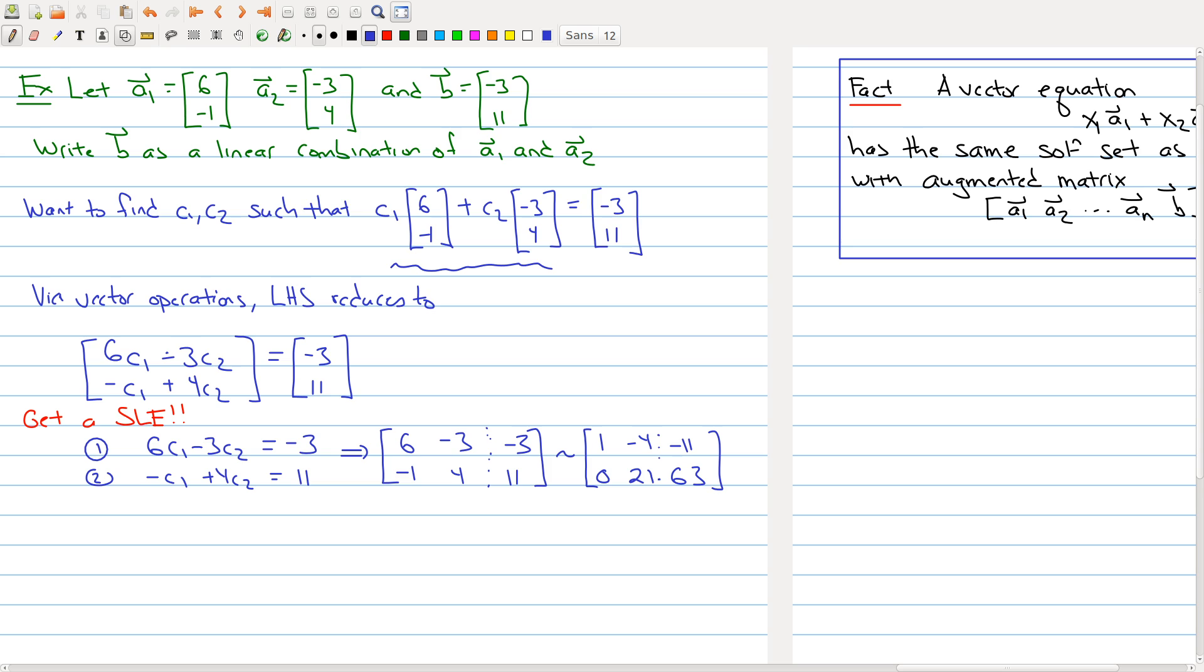And you could do a little bit further, but if you stare at it in this case what we get is that c₂ has to be 3, because 21 times 3 is 63, and c₁ would have to be equal to 1. And you could get that from maybe going back to equation 2 here. I plug in 3, so -c₁ + 12 = 11, so that would mean that c₁ is 1.